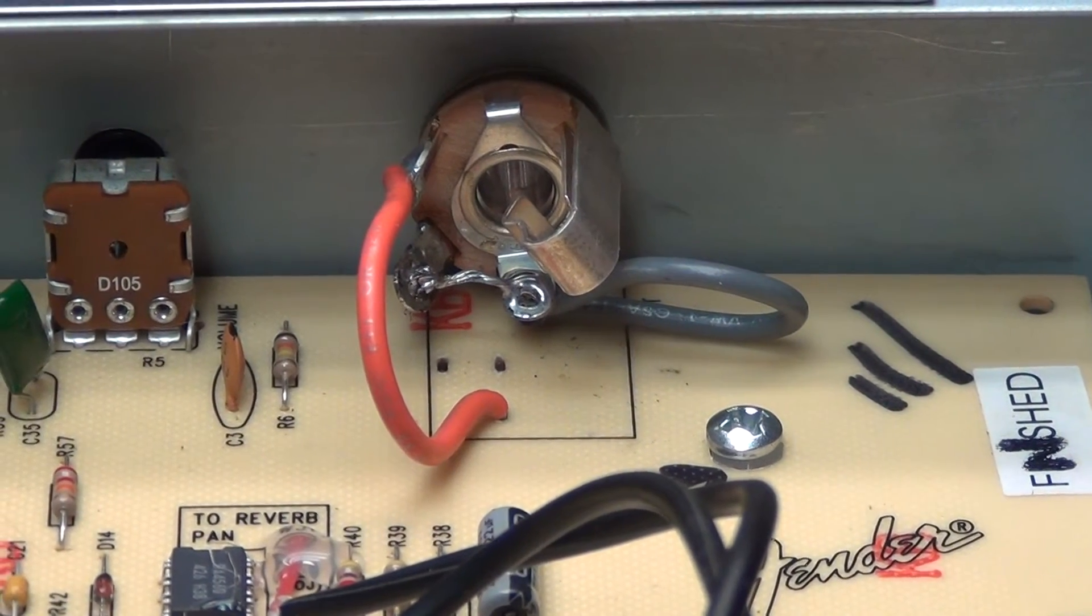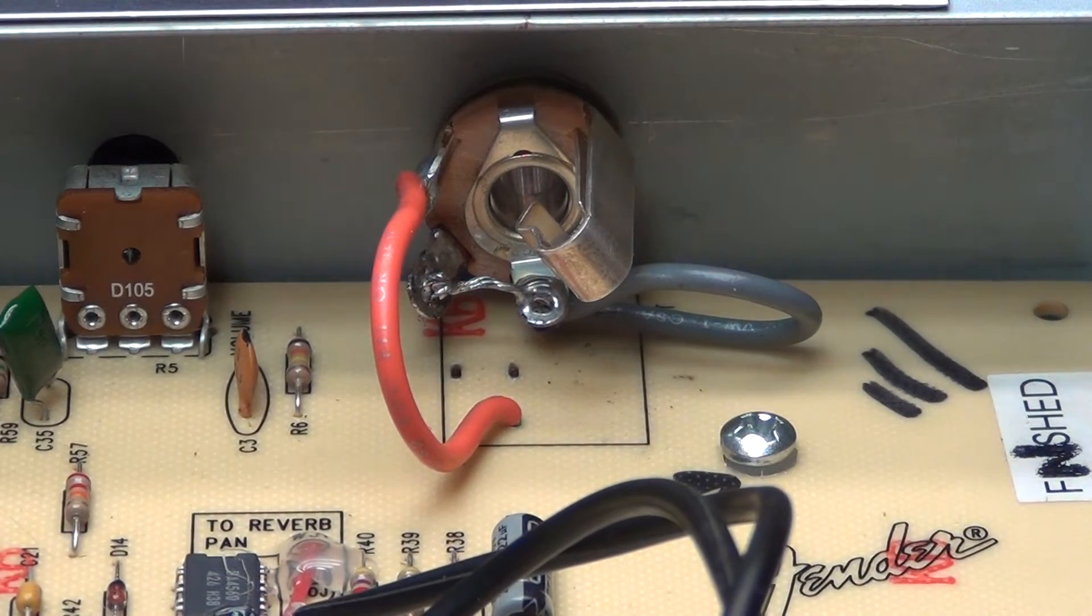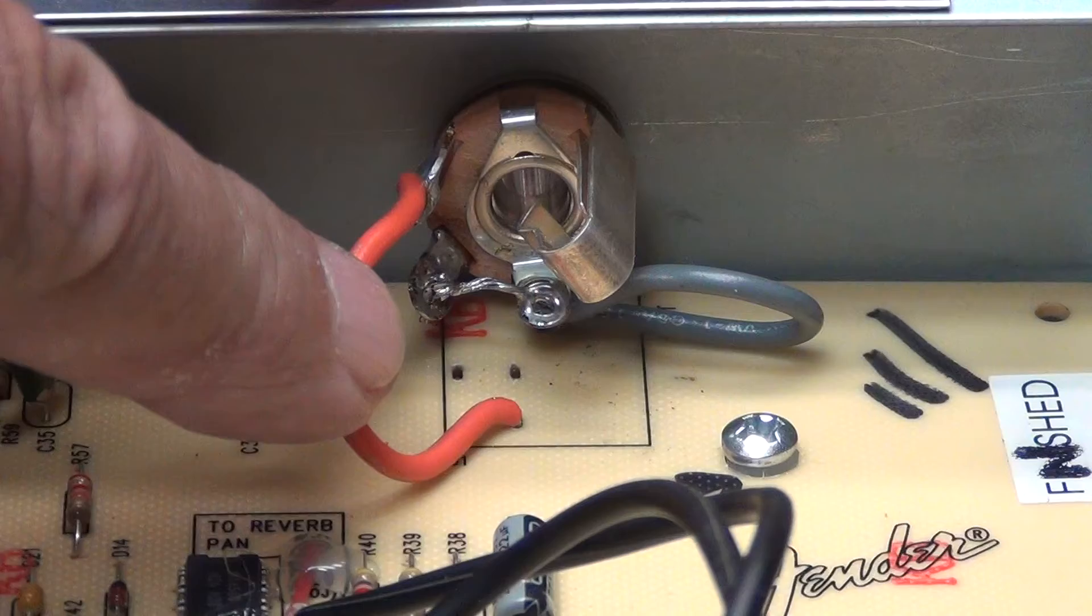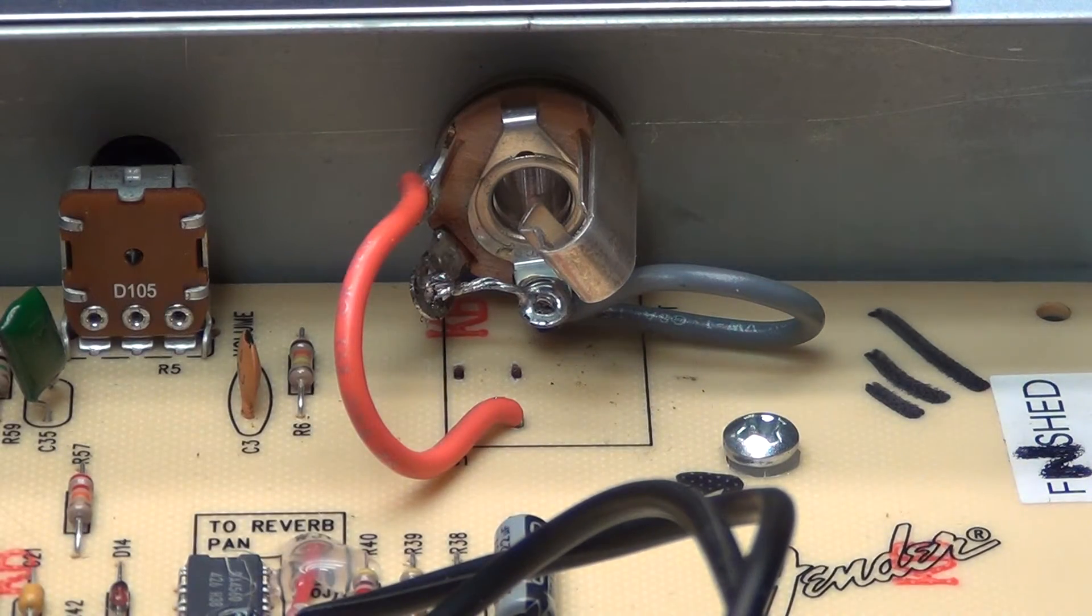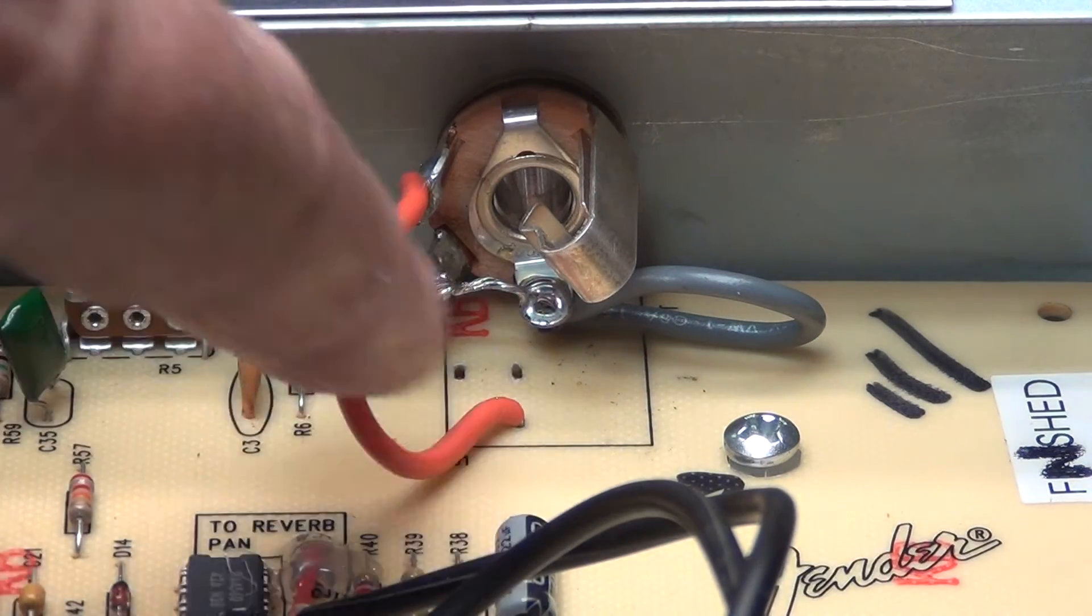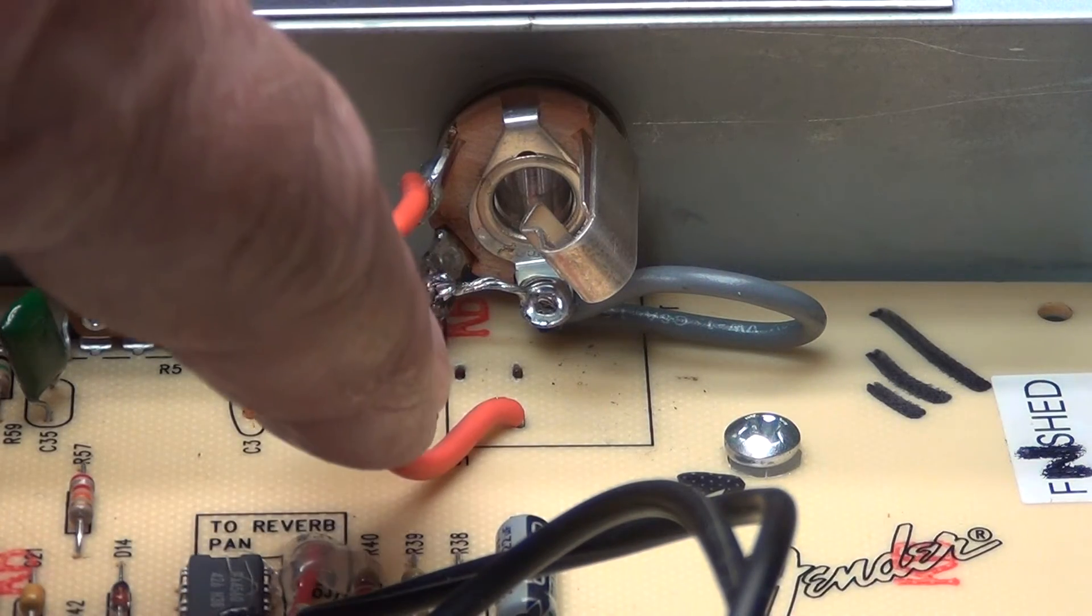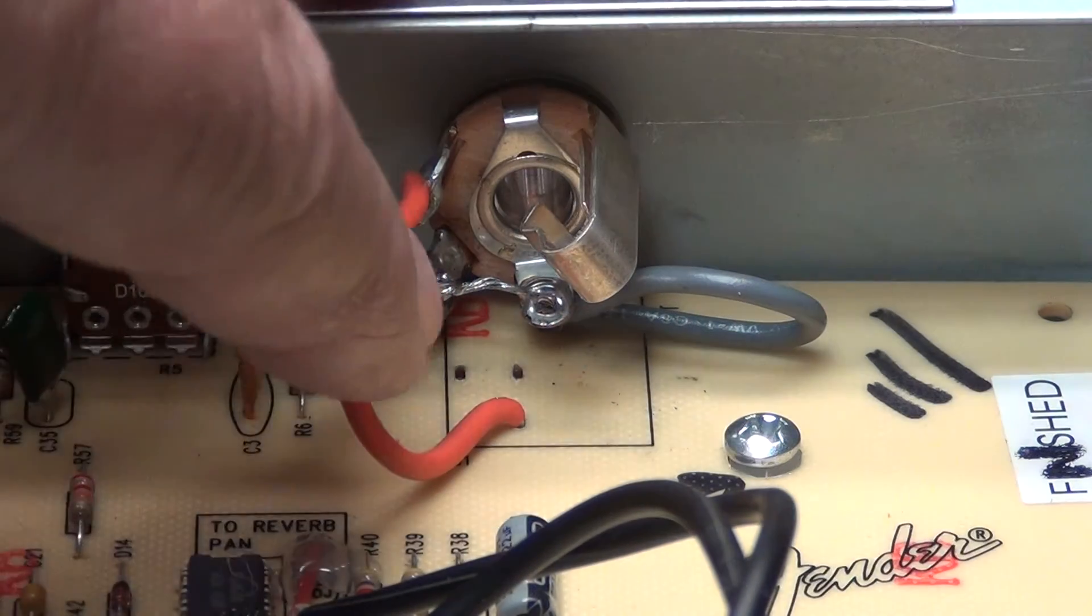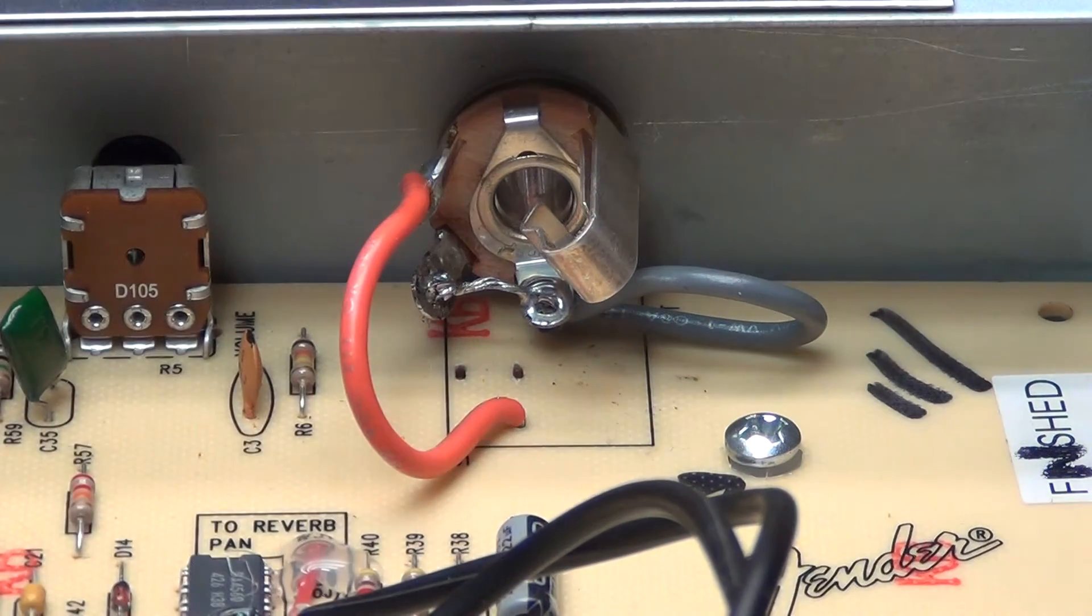So there we are. Finished up getting the jack installed. And as you can see, we've used the nearest point up there, which on the old jack was marked number one. That is our ground. You can see below that it jumpers over to the shorting switch of the Switchcraft. And then we used what was on the old jack as number two, which comes to the hot. And everything is good. It's just a reminder.